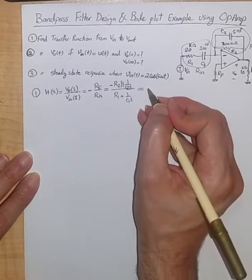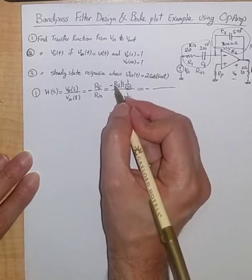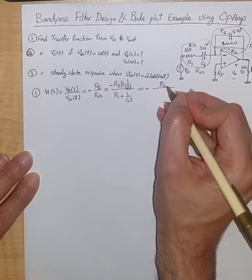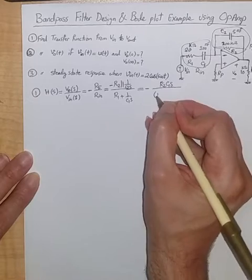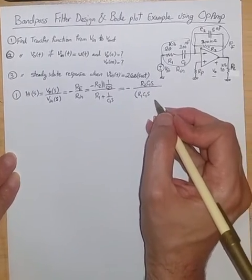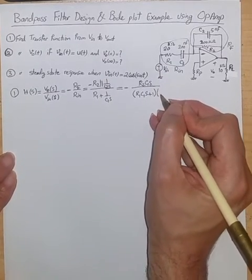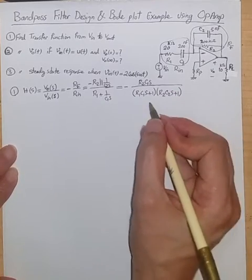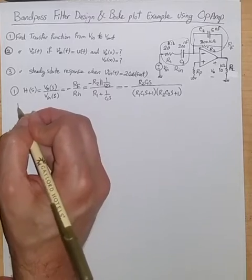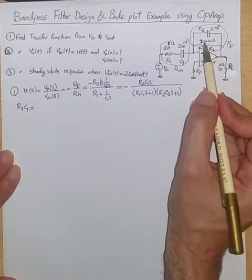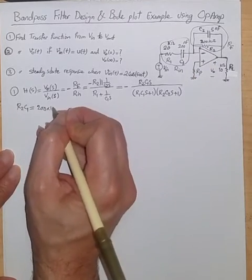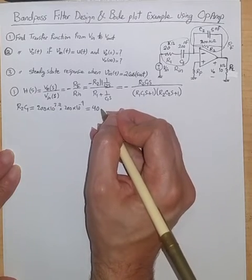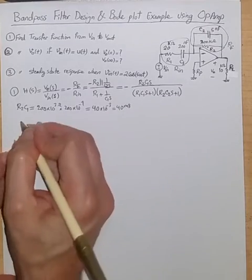Rewriting, the feedback term simplifies to R2 / (R2*C2*s + 1), and the input term gives (R1*C1*s + 1) / (C1*s) from the series combination. So H(s) becomes minus R2*C1*s divided by (R1*C1*s + 1)(R2*C2*s + 1). Now computing R2*C1: that is 200kΩ times 200nF, which equals 40×10⁻³ or 40 milliseconds.